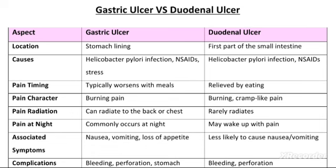Second difference hai causes or etiology — kya kya causes hote hain. Gastric ulcer ke causes hain: Helicobacter pylori infection, non-steroidal anti-inflammatory drugs, and stress. Jo duodenal ulcer hai, uske causes hain: Helicobacter pylori infection (jisko hum H. pylori infection bhi kehte hain) and non-steroidal anti-inflammatory drugs.